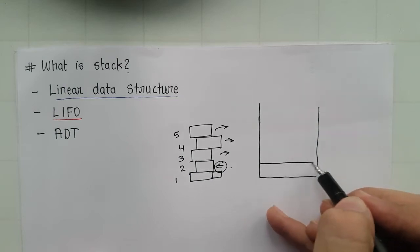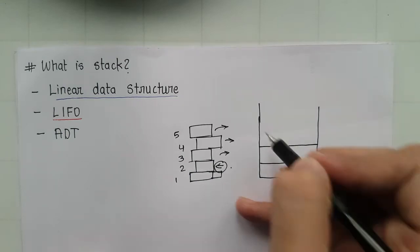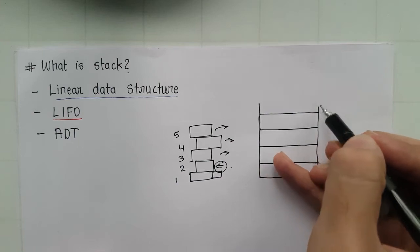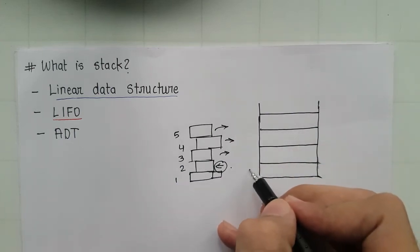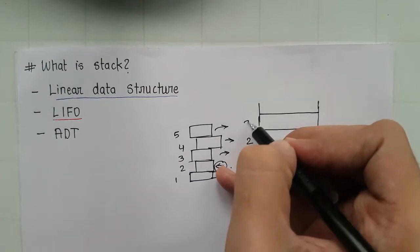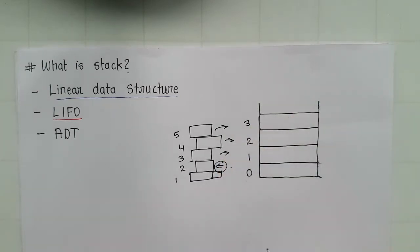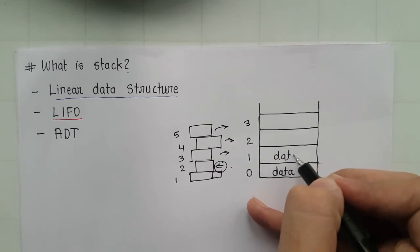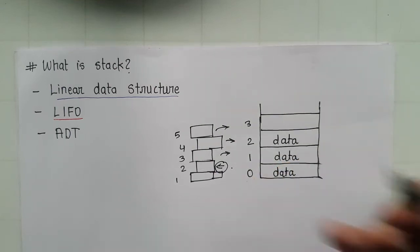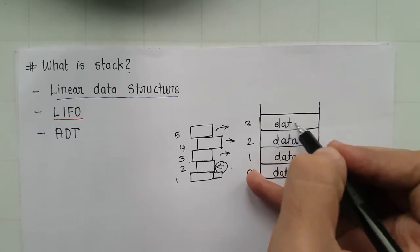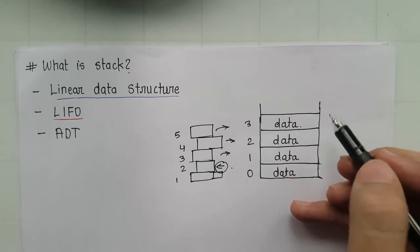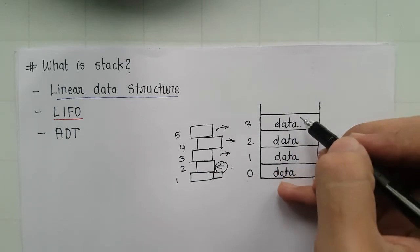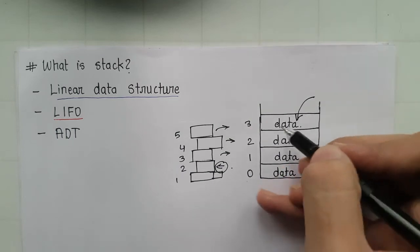Stack is a linear data structure. So this is our zero index, first index, second index, third index, and consecutive indexes. So our data is inserted from the zeroth index and the consecutive upper indexes. So when we want to delete the data, data is deleted from the topmost position. Data can't be deleted from the zeroth index. It has to be deleted from the topmost index. The topmost data would be deleted first, then the bottom, then its bottom.